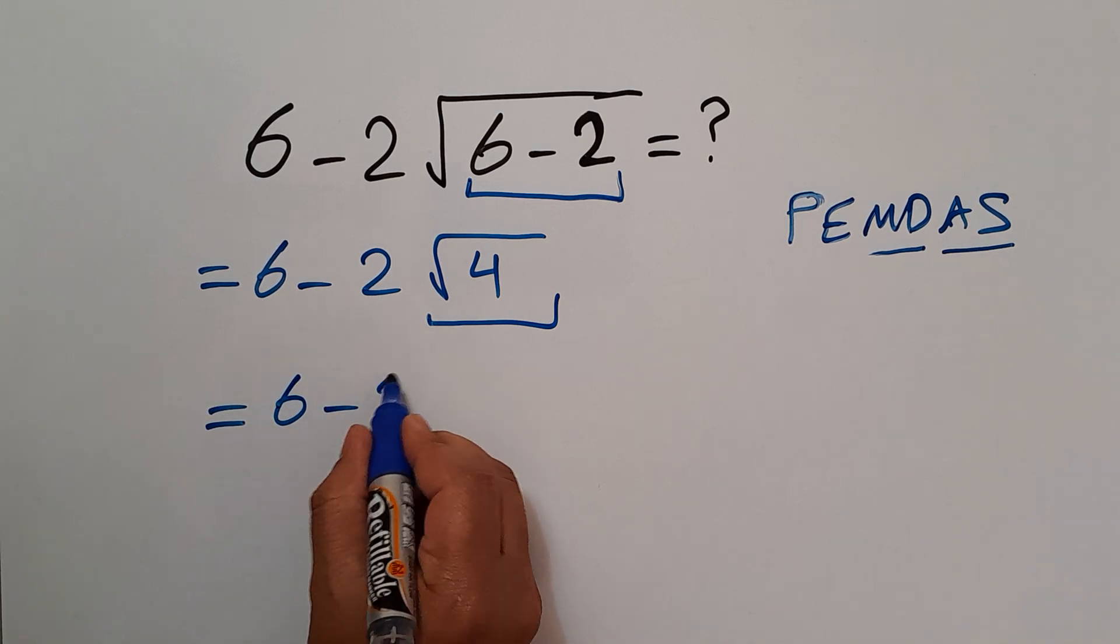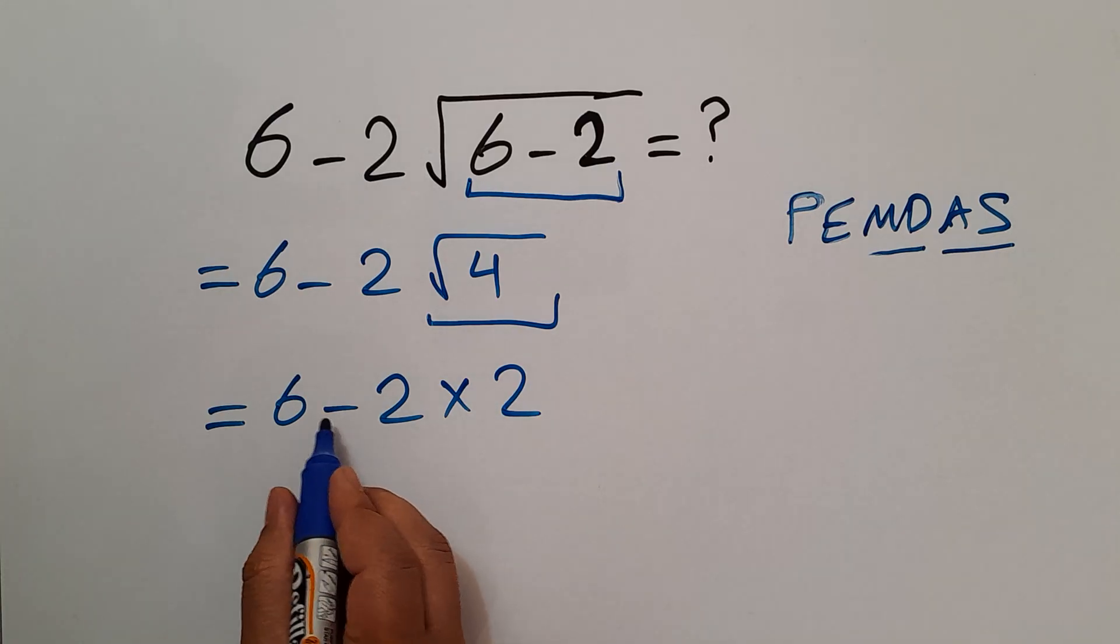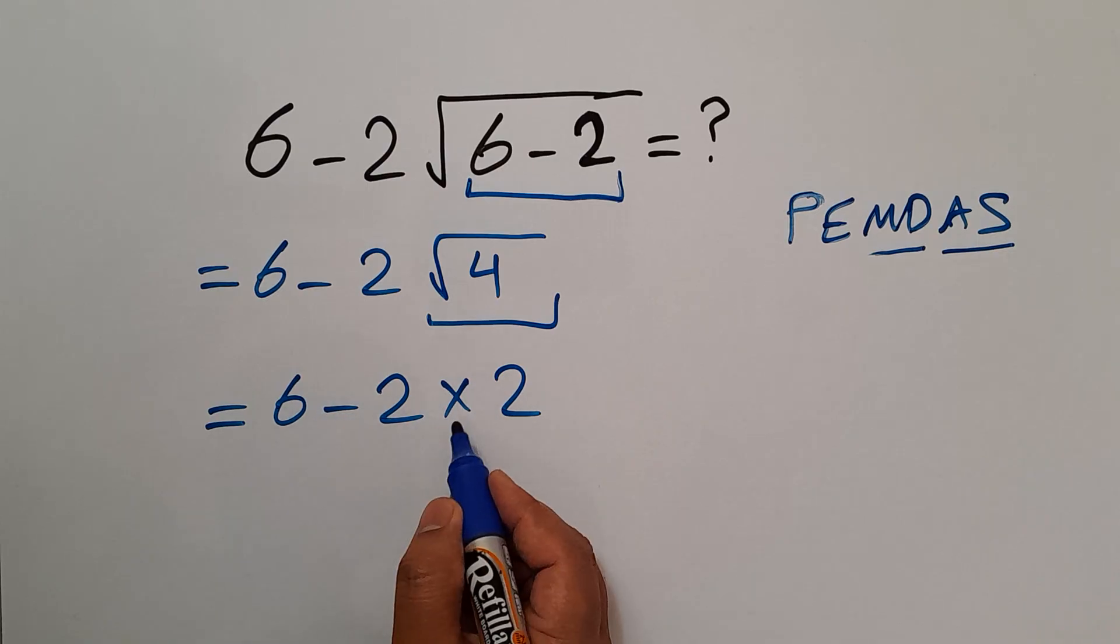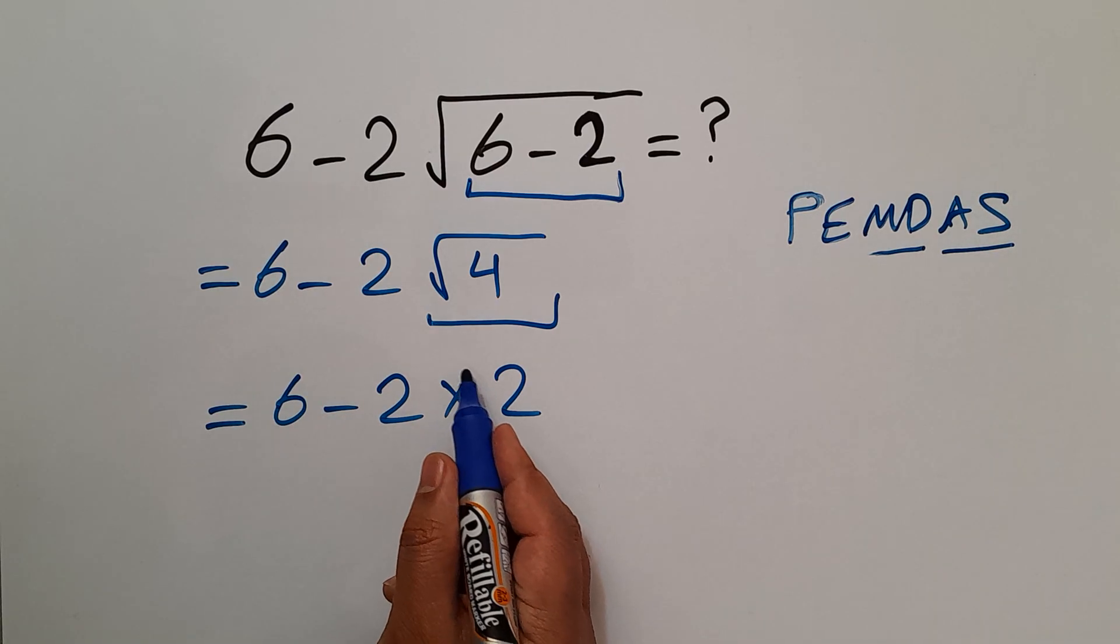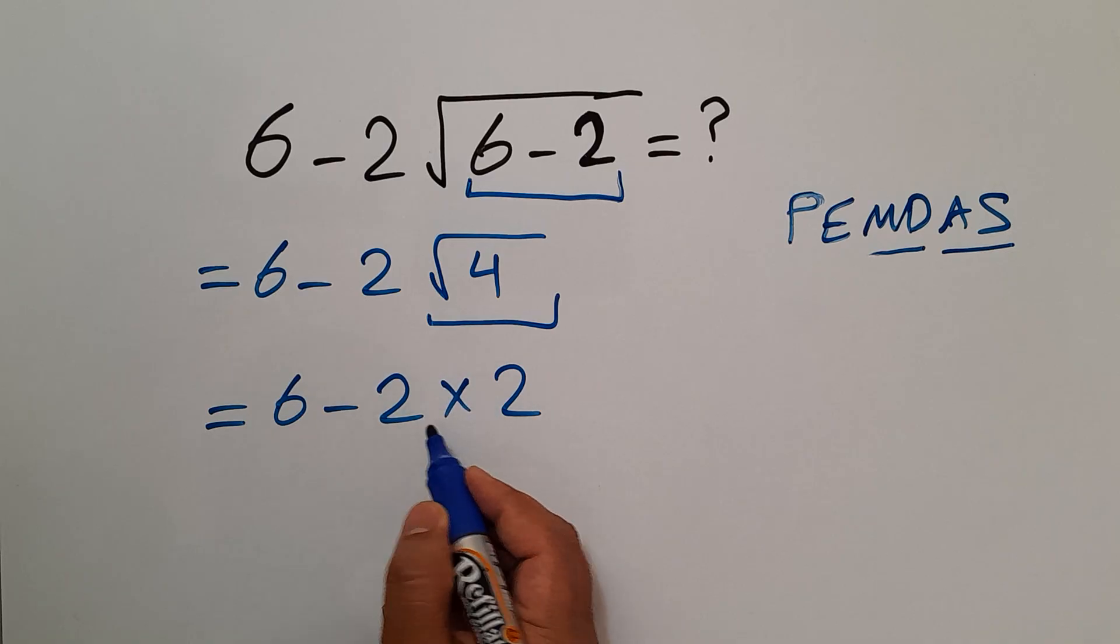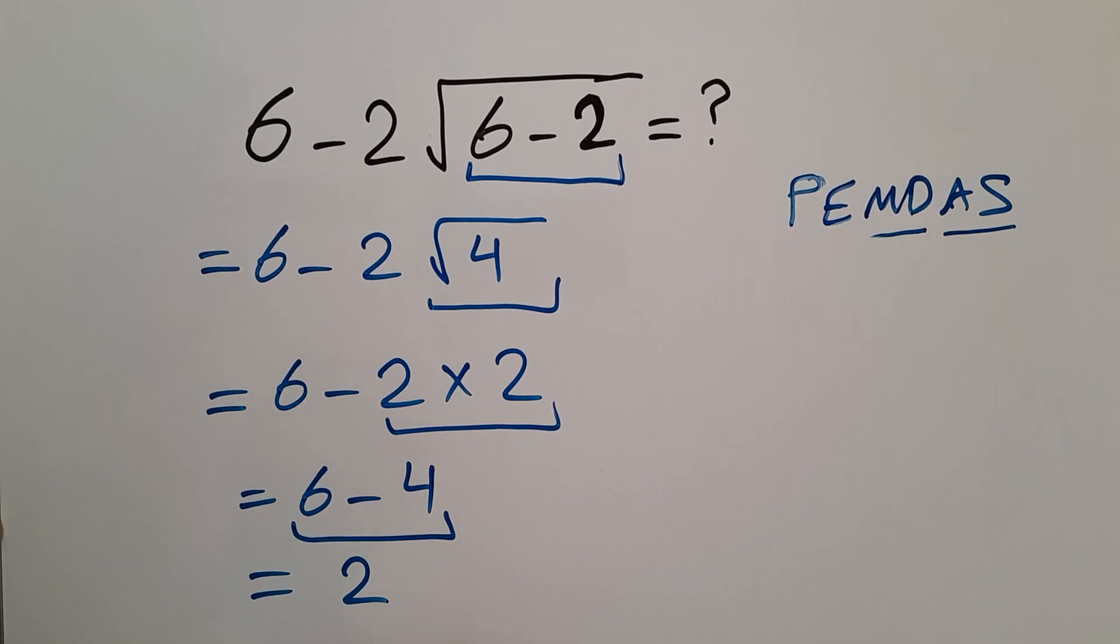So we have 6 minus 2 times 2. Now, in this expression we have 1 subtraction and 1 multiplication. According to PEMDAS, we first do multiplication. 2 times 2 equals 4. So 6 minus 4, and this is equal to 2. So our final answer to this problem is just 2.